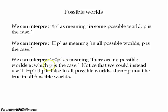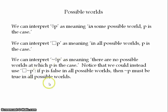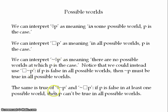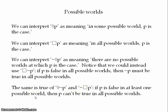You can see that possible worlds talk captures the definition used earlier when talking about impossibility — they're interchangeable. And the same is true of possibly not P and not necessarily P. Because if P is false in at least one possible world, then it can't be true in all possible worlds. Possibly not P just means not P is the case in at least one possible world — so clearly it's the same as not necessarily P.